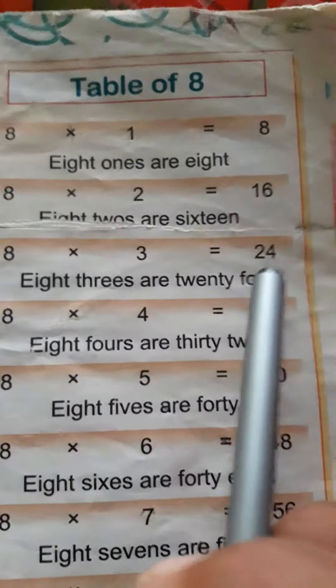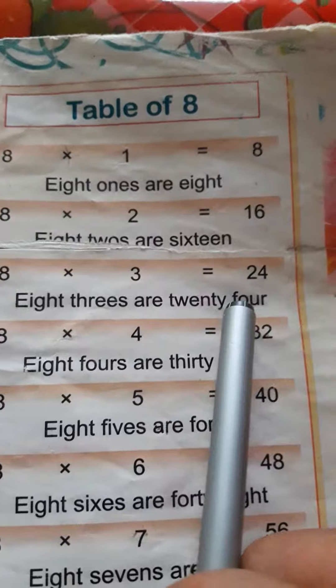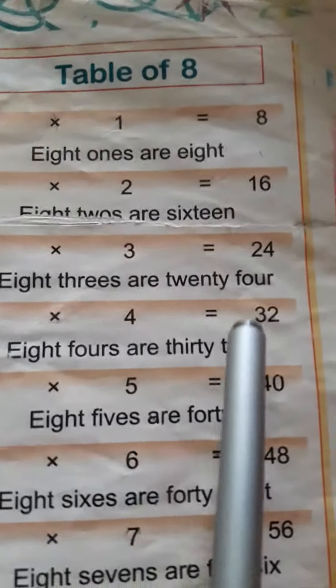Eight threes are twenty-four. Eight threes are twenty-four. Eight fours are thirty-two.